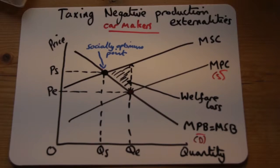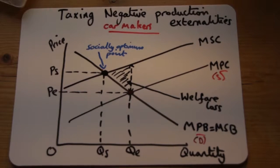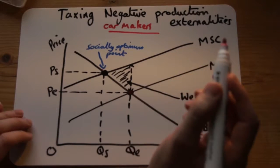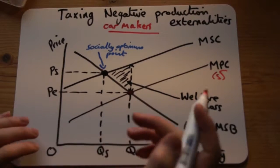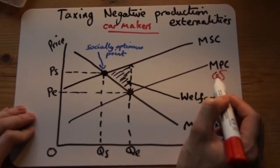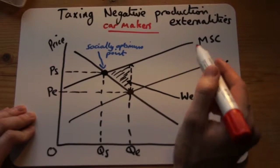So what we need to do, one way of doing that is taxing. So what we might want to do is tax the producer. That tax is a direct cost to the producer, and so what that would do is mean their costs rise if we tax them.